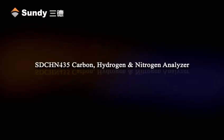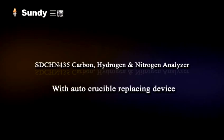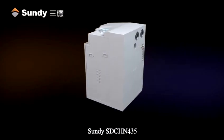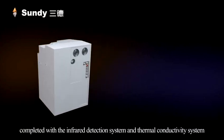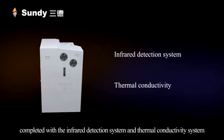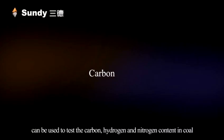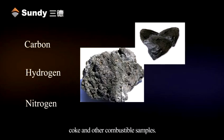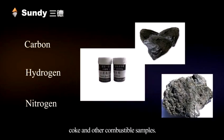SDCHN 435 Carbon, Hydrogen, and Nitrogen Analyzer with Auto-Crucible Replacing Device. The SDCHN 435, completed with the infrared detection system and thermal conductivity system, can be used to test the carbon, hydrogen, and nitrogen content in coal, coke, and other combustible samples.